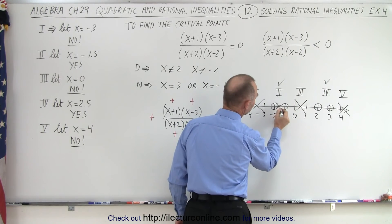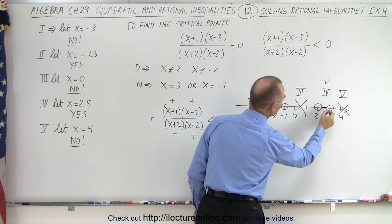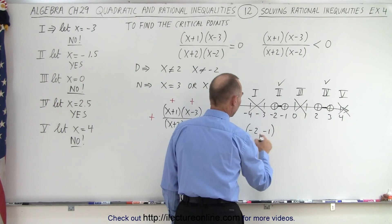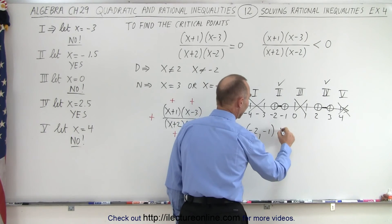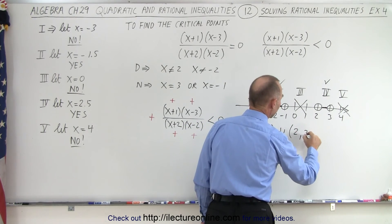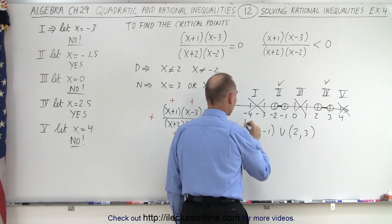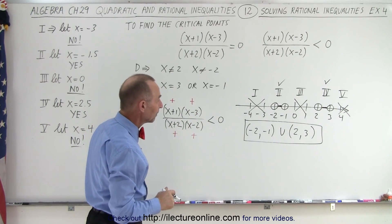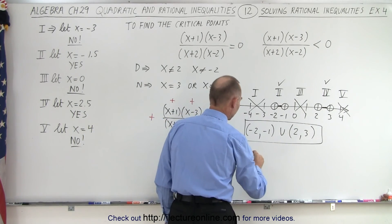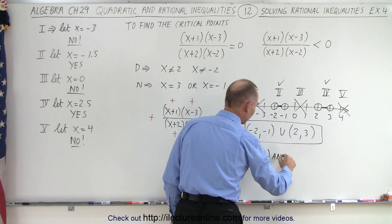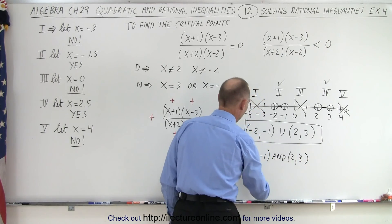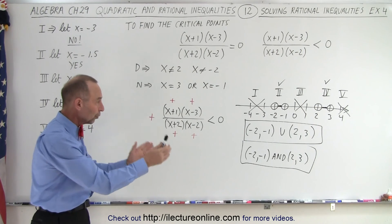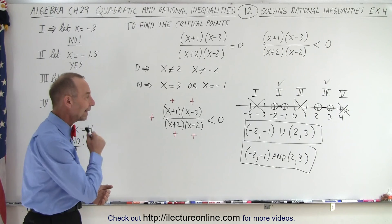The only parts of the solution are the region between negative two and negative one, and the region between two and three. Written in interval notation, the solution is (-2, -1) union (2, 3), with parentheses because none of the endpoints are included. The union symbol means both of those regions together form the total solution set for this inequality.